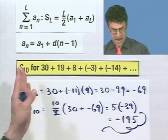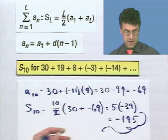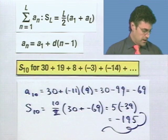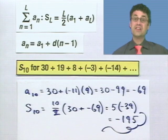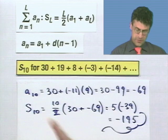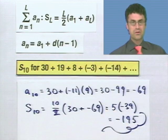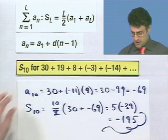So that means if you add the first 10 terms of this particular arithmetic sequence, the sum is negative 195, and you don't have to actually even write down all the terms. Just get the first term, get the last term, and then use this really cool formula that we derived ourselves. OK, cool.